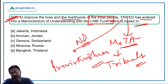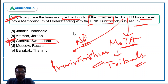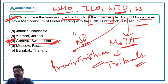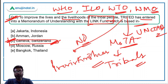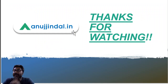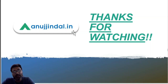The correct answer is Option C — Geneva. This Link Fund is located in Geneva. In Geneva, you will also find the headquarters of WHO, ILO, WTO, World Meteorological Organization, and UNCTAD. There are a lot of important international organization headquarters in Geneva, which is in Switzerland. That's it for the session. I hope all the questions are clear. If you have any doubts, you can ask in the comment section. Thank you so much for watching. Goodbye, take care and God bless!